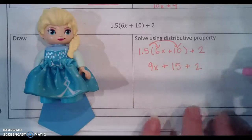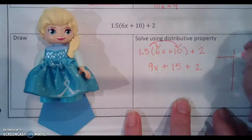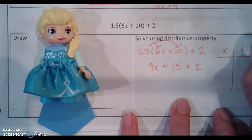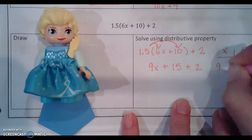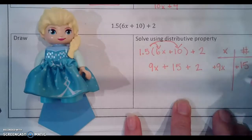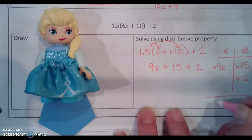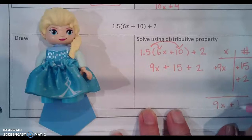And I'm gonna do a last name chart. I have x's and I have numbers. 9x. 15. Positive 2. All right. Add it all up. 9x plus 17.